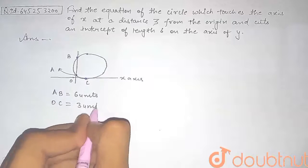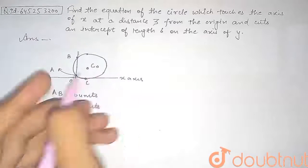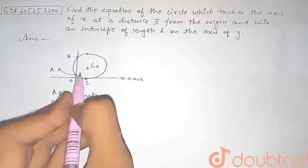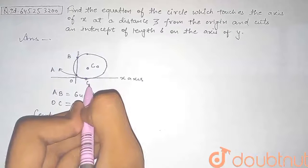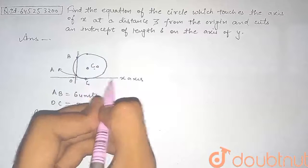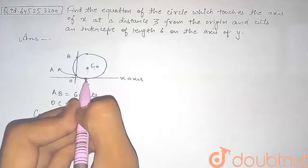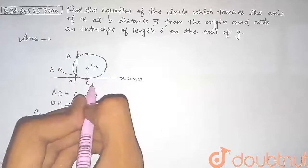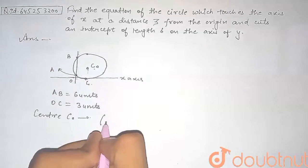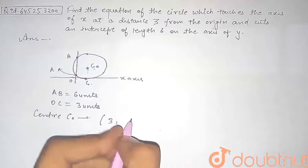Now we locate the center of the circle, let it be C₀. Since C has an x-coordinate of 3, and the line from the center to the point of tangency must be perpendicular to the x-axis, the center C₀ will also have the same x-coordinate. So the x-coordinate of the center is x = 3. We now need to find the y-coordinate and the radius of the circle.